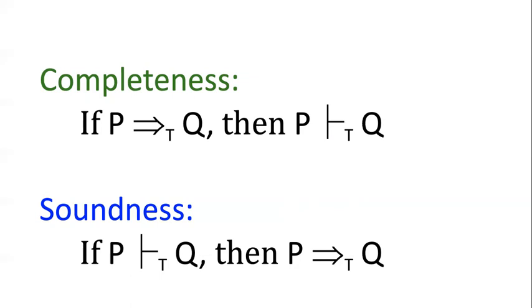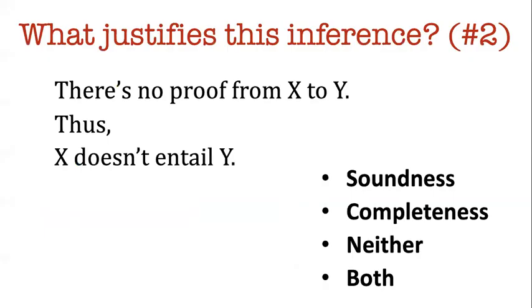Okay, let's see if you can evaluate one more argument that I give you. Let's say I tell you this, there's no proof from x to y. Therefore, x doesn't entail y. What can you infer about this? Or what allows you to infer this? Any which of those metalogical theorems? So pause your videos and see if you can answer this.